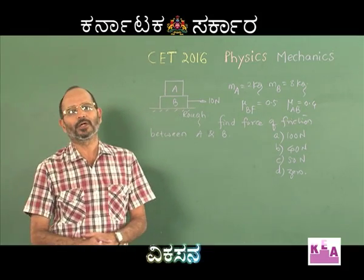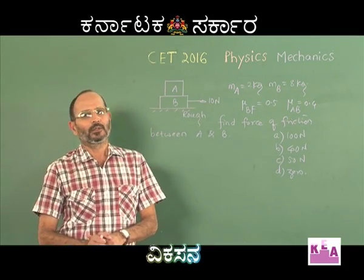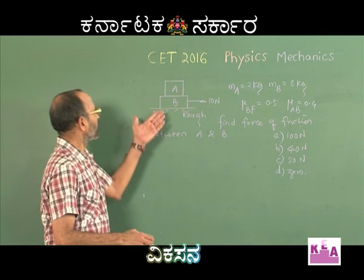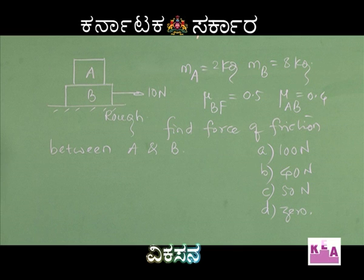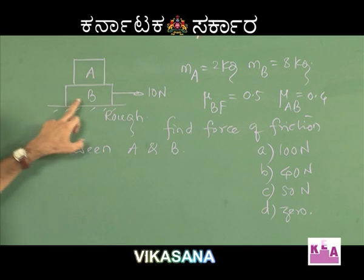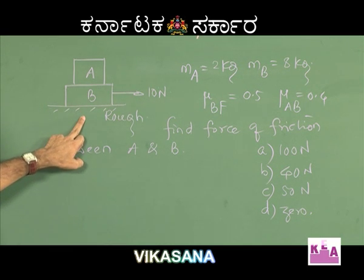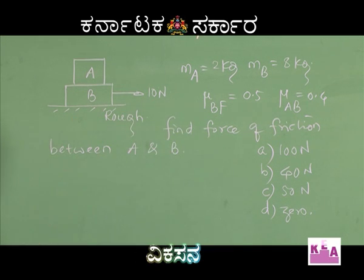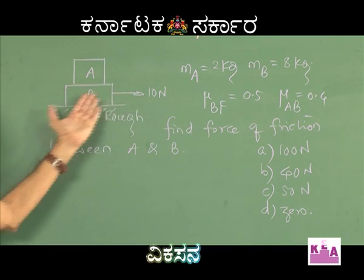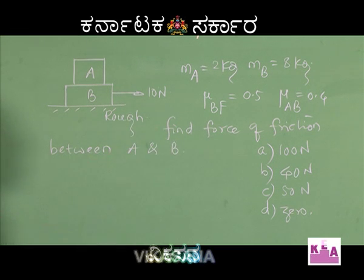Here is one more beautiful problem on friction. There are two blocks A and B kept on a rough horizontal surface. A is on top of B. The mass of A is 2 kg and that of B is 8 kg. The coefficient of friction between block B and the floor is 0.5 and that between A and B is 0.4. A force of 10 newtons is applied on B and you have to find the force of friction between A and B.